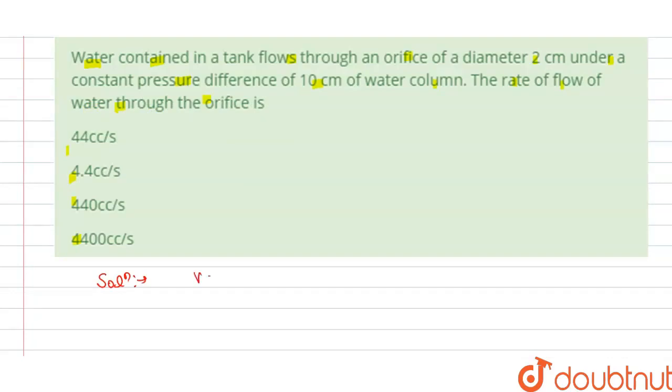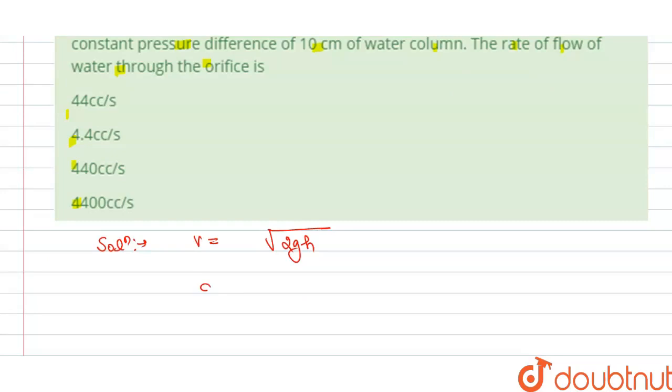The solution of this question: we know that velocity v is equal to square root of 2gh, where g is acceleration due to gravity and h is height. h is 10 centimeter given to us, so we can write here g is 9.8 meter per second square.